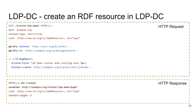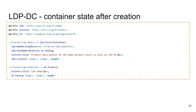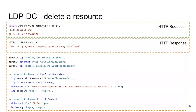When we POST to a Direct Container — creating a bug report, for instance — the bug report is created. Looking at the state of the container after creation, we can see the container contains the bugs including the new one via ldp:contains, and the membership resource has the hasBug relation to the same new bug. The Linked Data Platform server manages both the containment triples and the membership triples for us — when we delete a resource, those triples are also deleted from both the container and the membership resource.